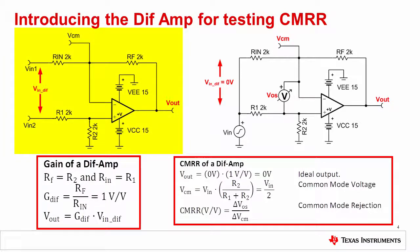The typical diff amp configuration shown on the left takes the differential input voltage and multiplies it by a gain. Assuming RF equals R2 and RN equals R1, the gain is calculated by dividing RF by RN. In the example shown on the left, the gain is 1 volt per volt, and the output is the differential input voltage multiplied by the gain.